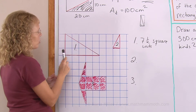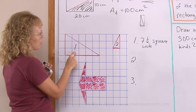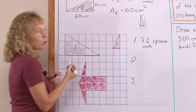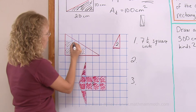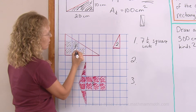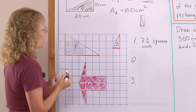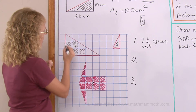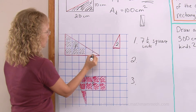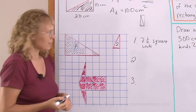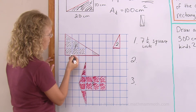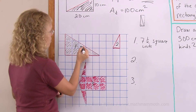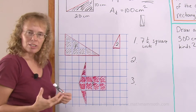You can also see that by counting. There's one, two, three, four square units. This one is almost a complete square unit — if I add this little piece, I get five square units. Then this one and this one make a sixth square unit, and this one and this one make a seventh square unit. And this last piece must be the half. So it makes sense.